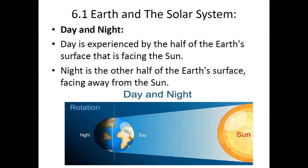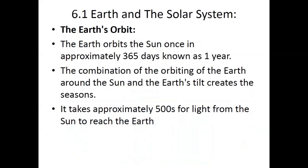Day and night: Day is experienced by the half of Earth's surface facing the sun, whereas night is the other half of Earth's surface facing away from the sun. As you can see, the side of Earth facing the sun experiences day whereas the side away from the sun experiences night.